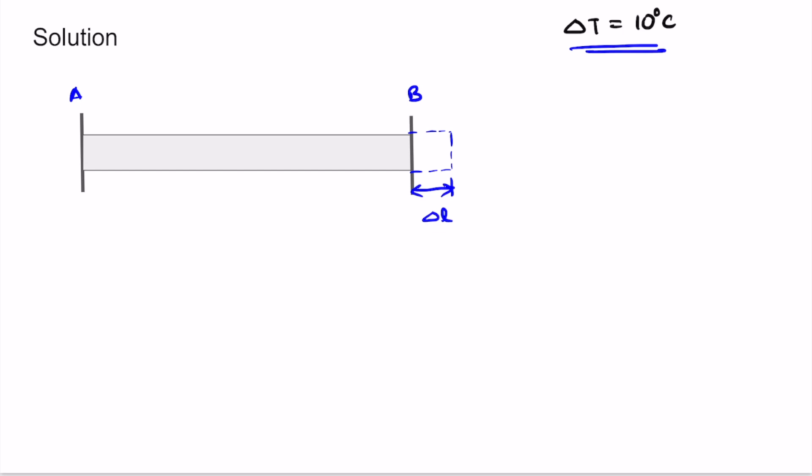But due to the presence of the support, this support is causing a stress in this bar. Let's call the stress as σ. In other words, we can say that the displacement due to this stress is balancing this ΔL, and therefore overall there is no change in position of this support B.